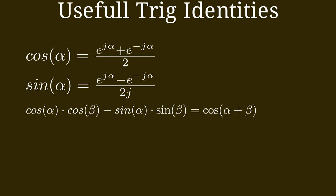One of the trig identities that we will use in the next step is cos(α)·cos(β) - sin(α)·sin(β) = cos(α+β).